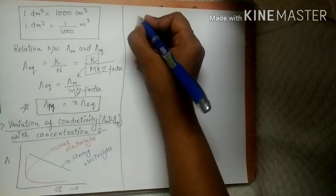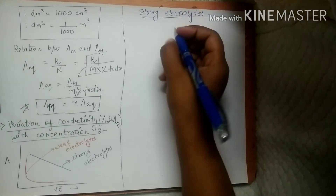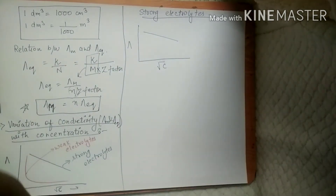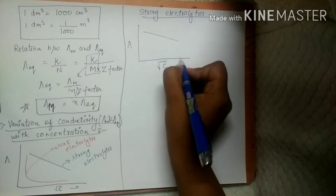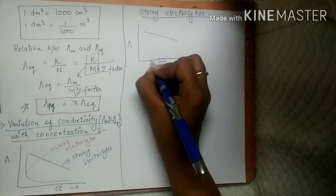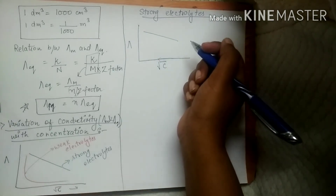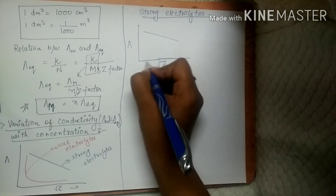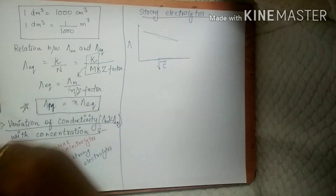For strong electrolytes, plotting lambda versus root C gives a linear graph. As we increase concentration, the value of conductance decreases. Conversely, as we dilute the solution, conductance increases because ions tend to move faster. In a more concentrated solution, ions are closer to each other and their movement is hindered; dilution increases ionic movement and conductance.